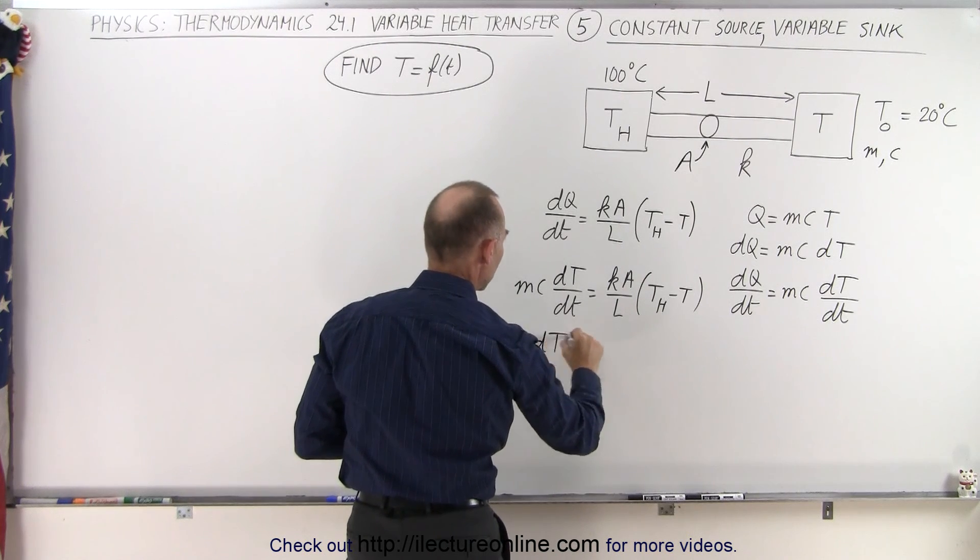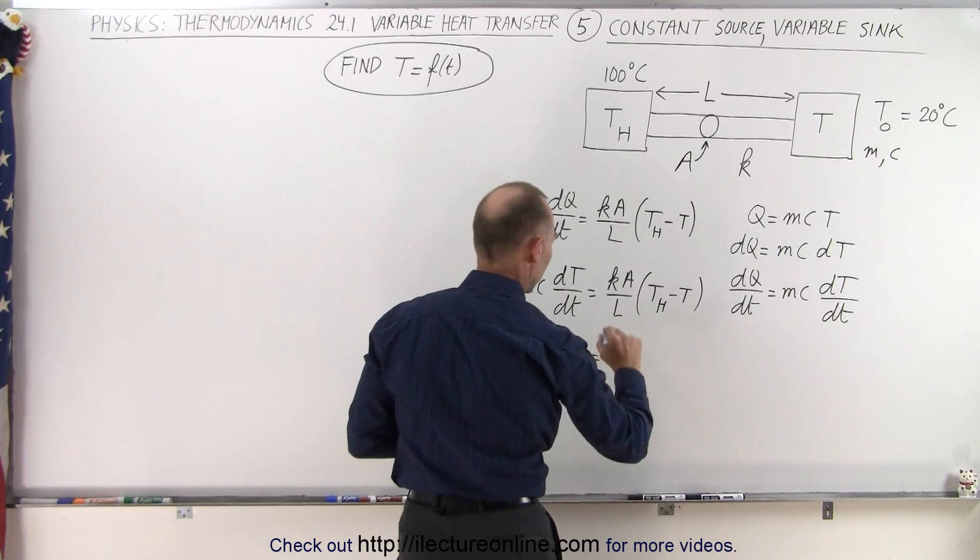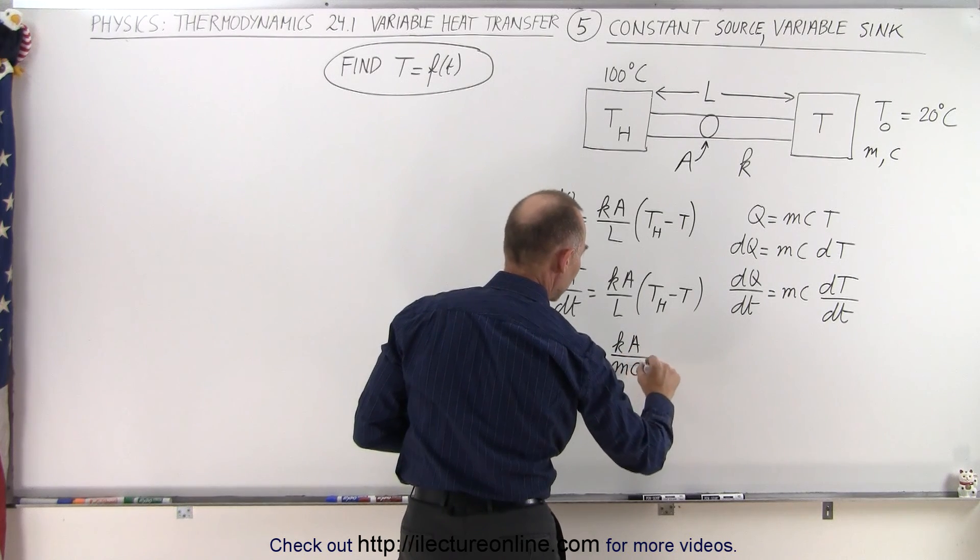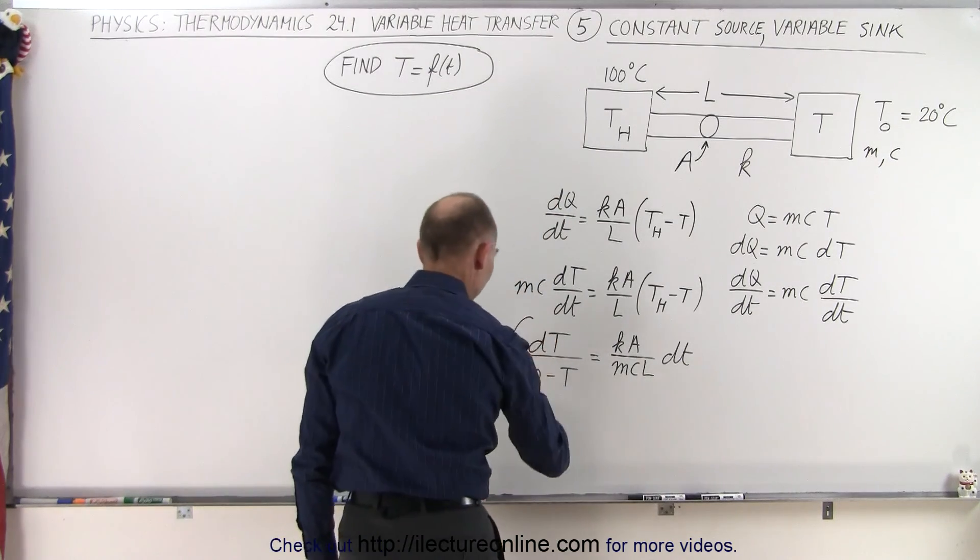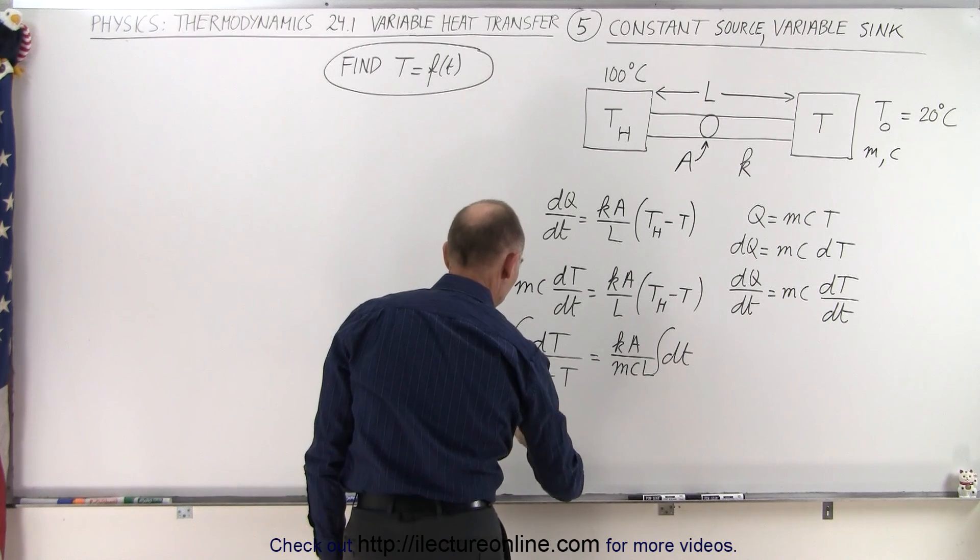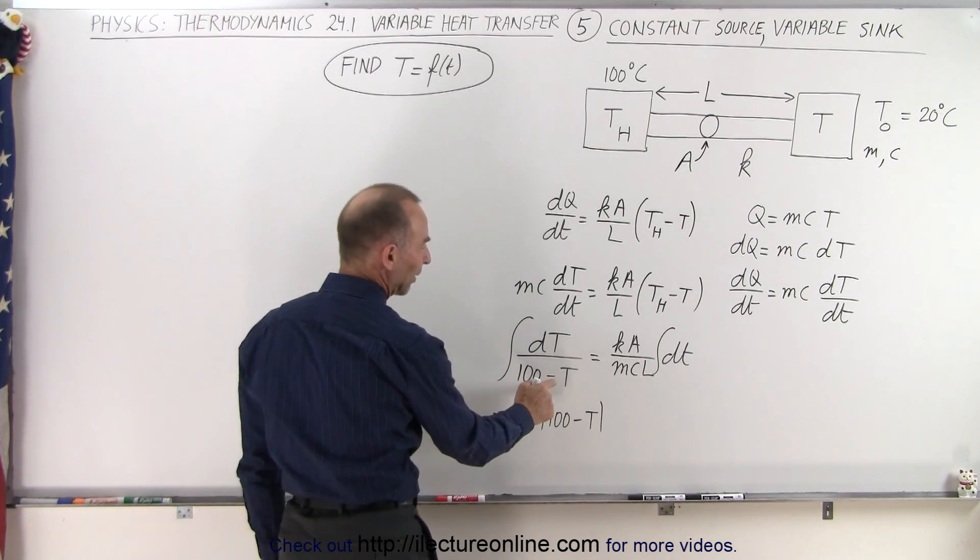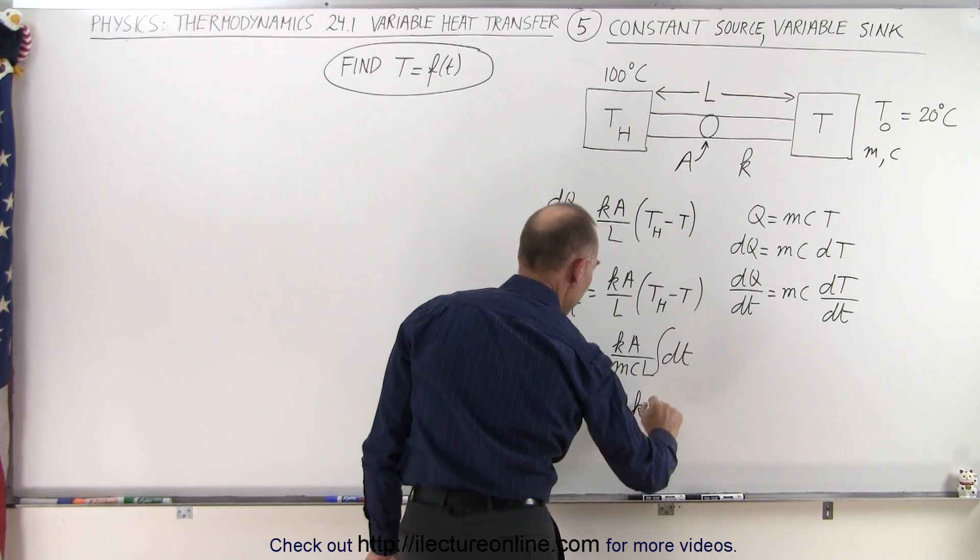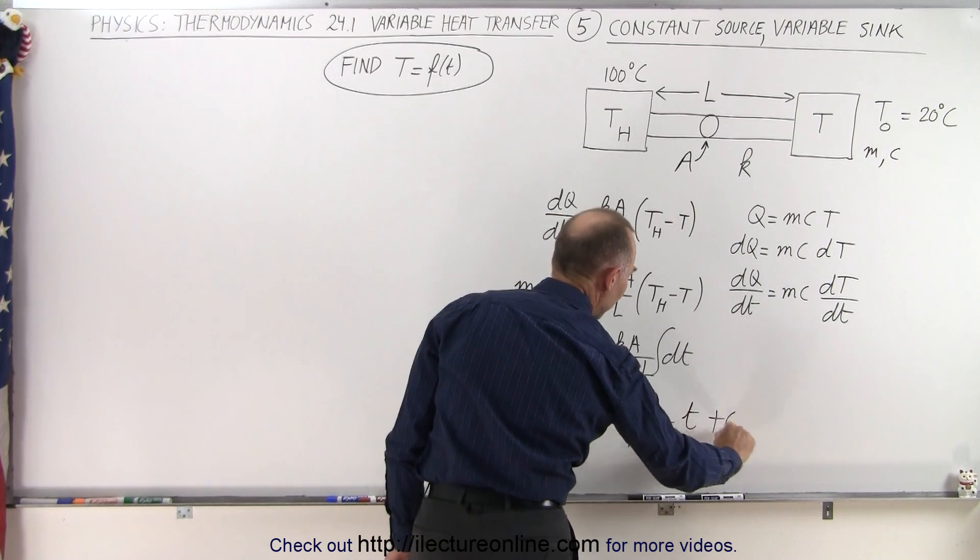We can rearrange the equation putting all the temperatures on one side, the T's on the other side. So here we end up with dT divided by 100 minus T is equal to on the right side we end up with KA over MCL times dT. And now we're ready to integrate both sides. So we integrate the left side, we integrate the right side, and on the left side we end up with the natural log of 100 minus T. Then we have to put a negative in front because we have a minus T in the denominator. On the right side we end up with KA over MCL times T plus a constant of integration.